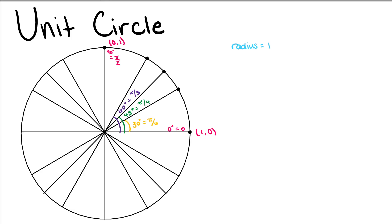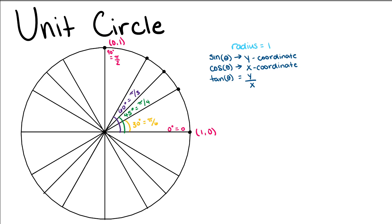Within our unit circle, our sine corresponds to our y coordinate, cosine corresponds to our x coordinate, and tangent is the ratio of y over x. We use theta to denote any angle within our unit circle, since we are talking about x and y coordinates. So that's why we have sine of theta, cosine of theta, and tangent of theta — just to represent any angle. It's just a variable.